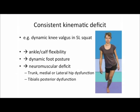Another example we're all familiar with is someone displaying a dynamic knee valgus pattern. You're looking at what contributes to that: distal kinetic chain issues like ankle and calf flexibility, dynamic foot posture issues, and neuromuscular deficits looking at both the proximal and distal kinetic chain.